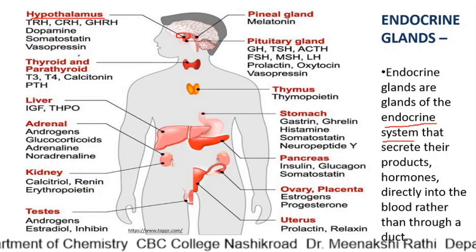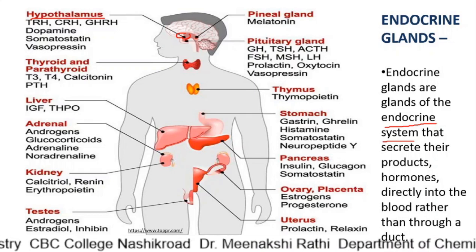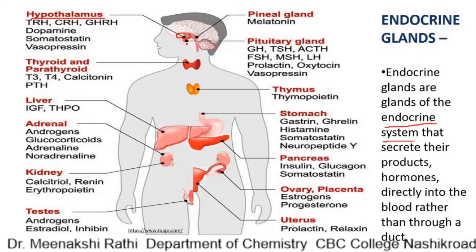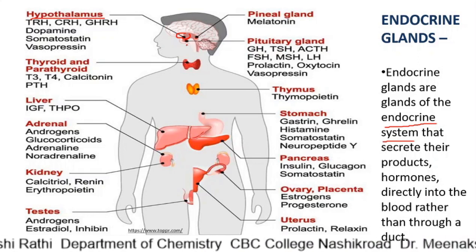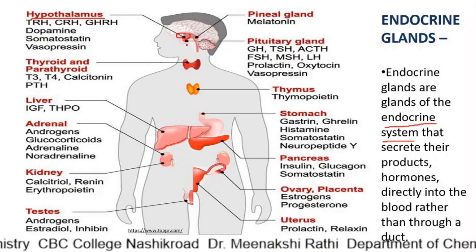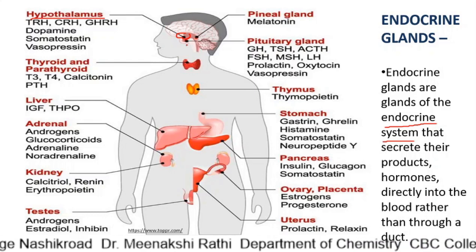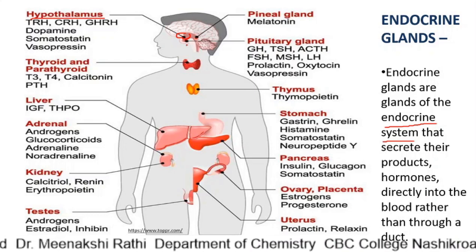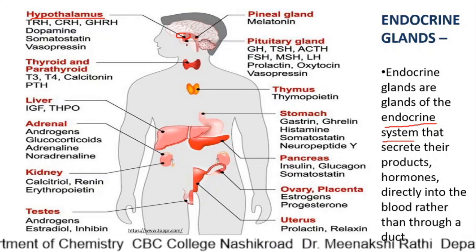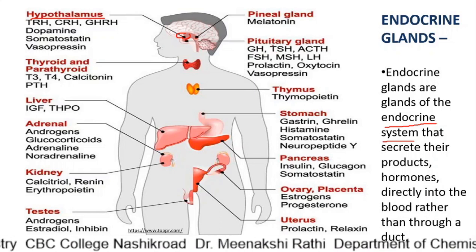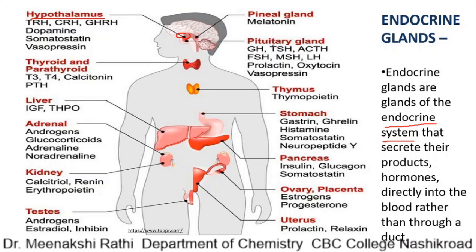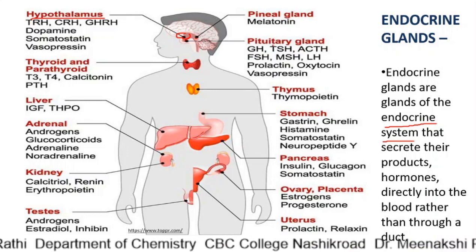The pituitary gland is located just below the hypothalamus and consists of two distinct parts: anterior pituitary and posterior pituitary. The posterior pituitary is not very active in human beings. The anterior pituitary is the master endocrine organ that produces several hormones influencing a variety of biochemical processes in the body.